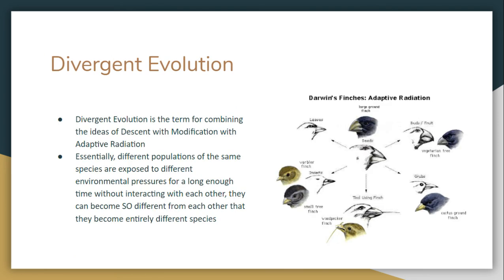Divergent evolution is basically what happens when you combine the idea of descent with modification with adaptive radiation from our previous videos. This is where a population or species gets exposed to a bunch of different environments for so long, without interacting with each other, that they start adapting differently and eventually become an entirely new species. The faster you can reproduce, the faster you can adapt and evolve and change. Divergent evolution is where one species becomes bunches of different species because of new environments.